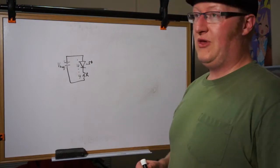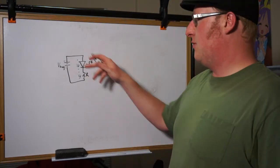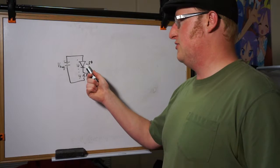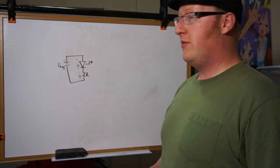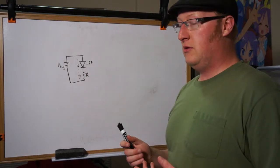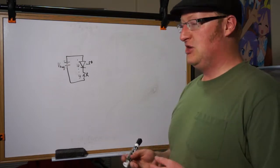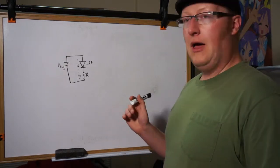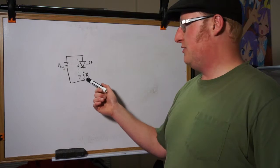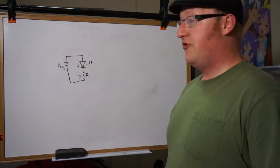Basically what it boils down to is we need to figure out how to make this circuit work such that this doesn't explode. Normally, if you just connect the diode to a battery, the diode, if it does work, it only works for a short period and just kind of goes bang. So we need something to limit that, which is what this resistor is in there for.